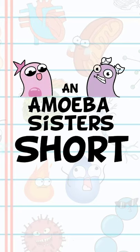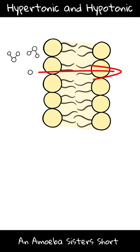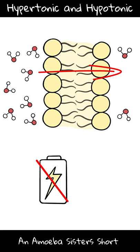Welcome to an Amoeba Sisters short. Osmosis involves a movement of water across a membrane. Because it's passive transport, water has a net movement from a high concentration of water to a low concentration of water.